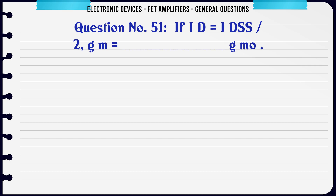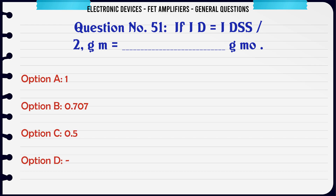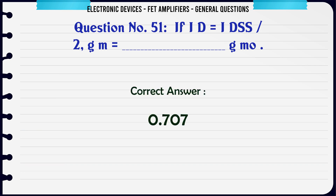If ID = IDSS/2, then GM/GM0 equals: A. 1. B. 0.707. C. 0.5. D. (no option). The correct answer is 0.707.